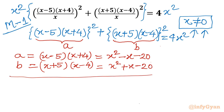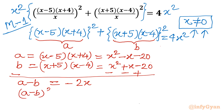Adding a and b won't give anything useful, so let us subtract. Computing a minus b: the x squared terms cancel, the minus 20 terms cancel, leaving minus 2x. So a minus b equals minus 2x, which means (a minus b) whole squared equals 4x squared. This matches our right-hand side.